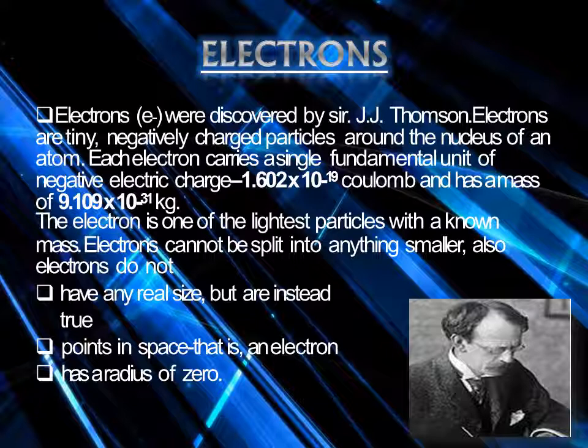Now let's talk about electrons. Electrons were discovered by J.J. Thomson. Electrons are tiny negatively charged particles around the nucleus of an atom. Each electron carries a single fundamental unit of negative electric charge, which is 1.602×10⁻¹⁹ coulombs. It has a mass of 9.109×10⁻³¹ kg. The electron is one of the lightest particles with a known mass — lighter than proton and neutron. An electron cannot be split into anything smaller; it is the lowest subparticle of an atom.